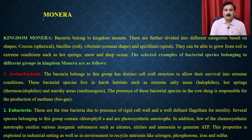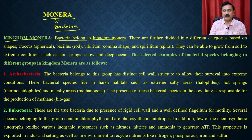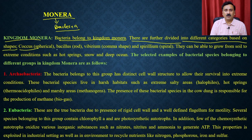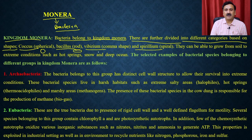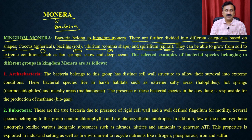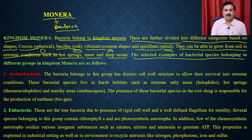Kingdom Monera is where bacteria belong. Bacteria are further divided into different categories based on shape: cocci (spherical), bacillus (rod shape), vibrio (comma shape), and spirillum (spiral). They can grow from soil to extreme conditions such as hot springs, snow, and deep oceans. Selected examples of bacterial species belonging to different groups in Kingdom Monera are as follows.